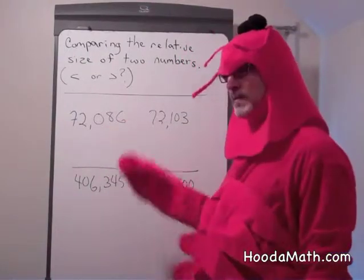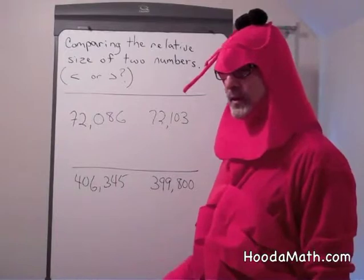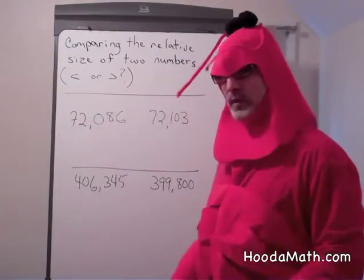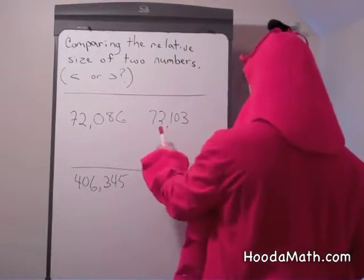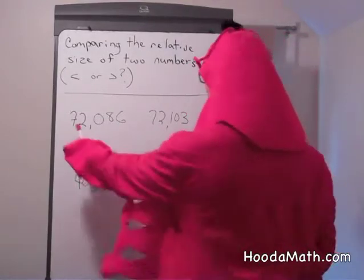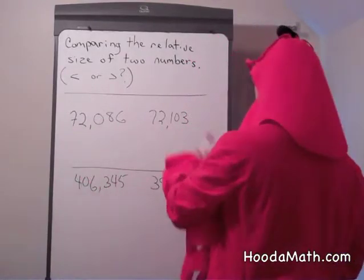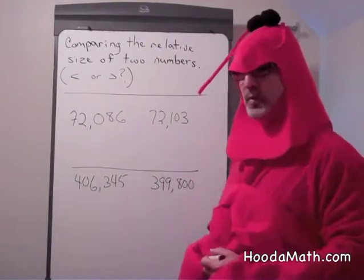But if they have the same amount of digits, we start comparing left to right, just the way you read. 72,086, 72,103. Which one's larger?